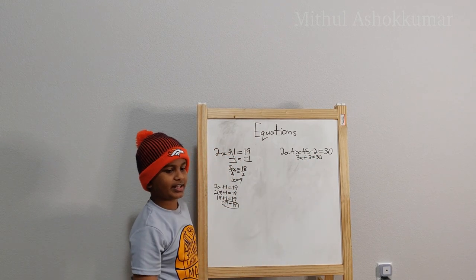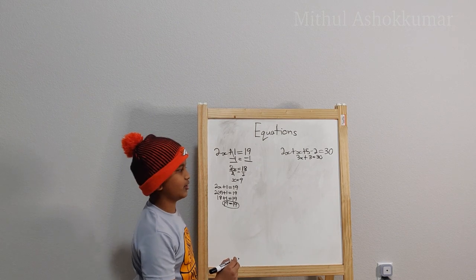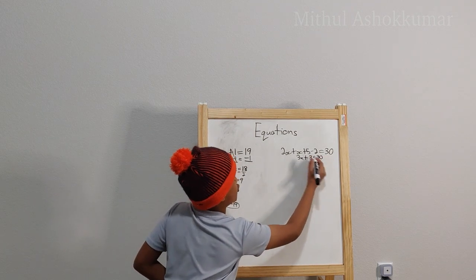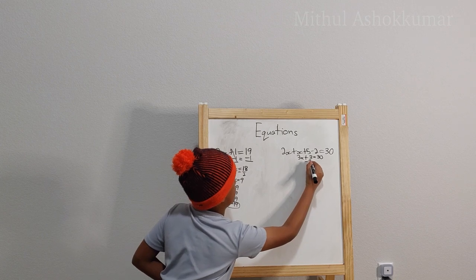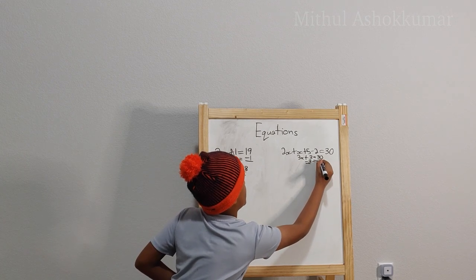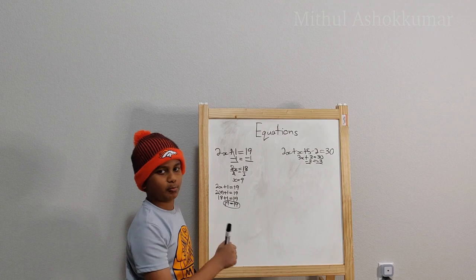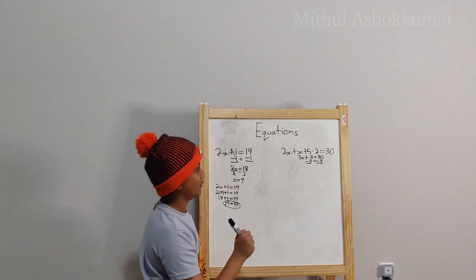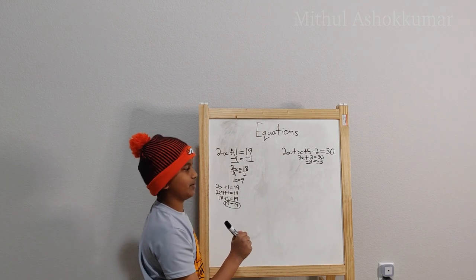And remember, if you want to get 3x on one side by itself, you just want to subtract the 3. And make sure that if you do something on one side, do it to the other. Otherwise your equation won't be true anymore.